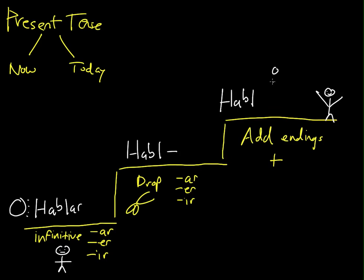And now the last step is to add our endings. So we have O, AS, A, AMOS, and AN.